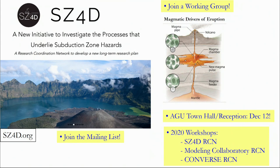My final slide is how you can get involved. There's an SZ4D webpage at sz4d.org — please join the mailing list. There are working groups attached to SZ4D, including one on the magmatic drivers of eruption. Please join that working group if you're interested in how CO2 cycles in volcanoes and how it leads to eruption. We're going to have an AGU town hall and workshops next year — there were four workshops this year alone. I hope to see you help guide this program as it develops, because multidisciplinary programs are really where our discoveries come from, and DCO has done this so patently well.